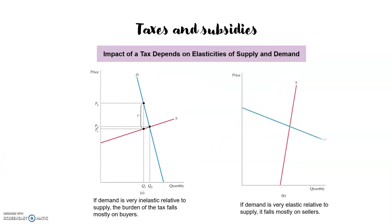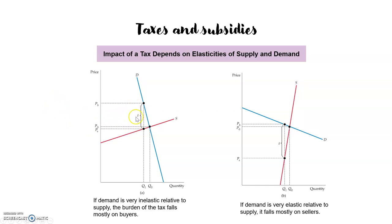In the previous case, the tax impact was equally divided between consumers and producers, but this depends on elasticities. When the demand is relatively inelastic and the supply is relatively elastic, the burden of the tax falls mostly on consumers. The difference between pb and ps shows that most of the tax is paid by the consumer, because the demand for them is very inelastic.